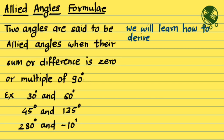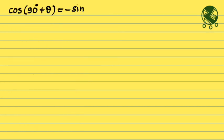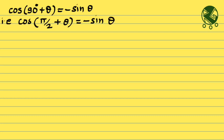We will learn how to derive, use, and remember these formulae. There is a formula: cos of 90 plus theta is equal to minus sine theta. We can also write this as cos of pi by 2 plus theta is equal to minus sine theta, because 90 degrees in radians is pi by 2.